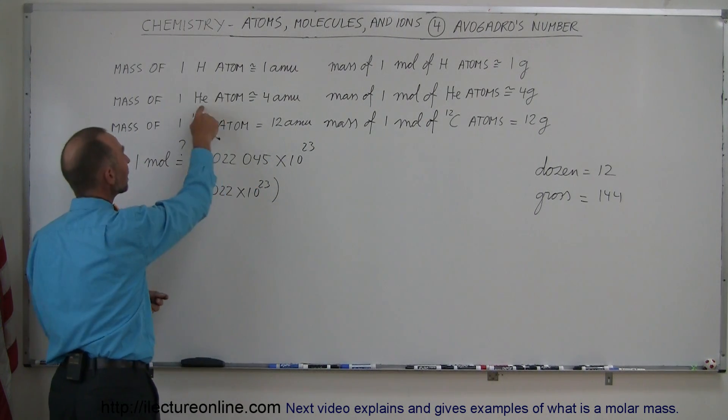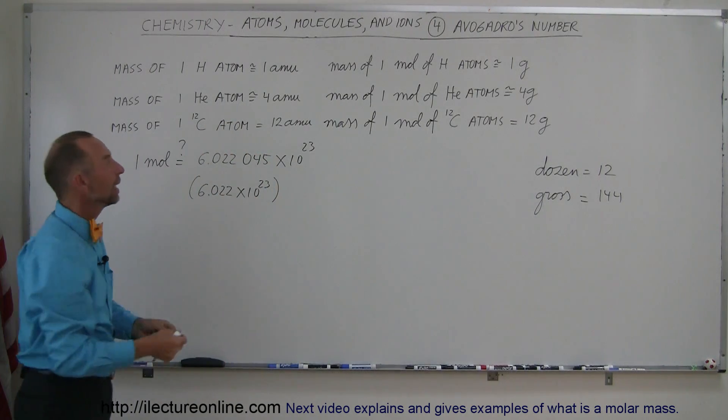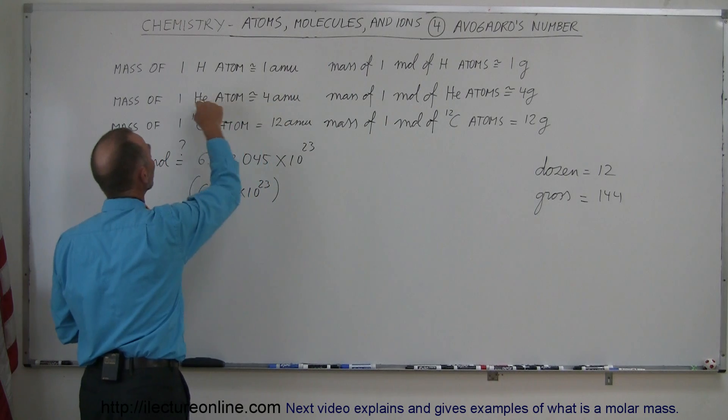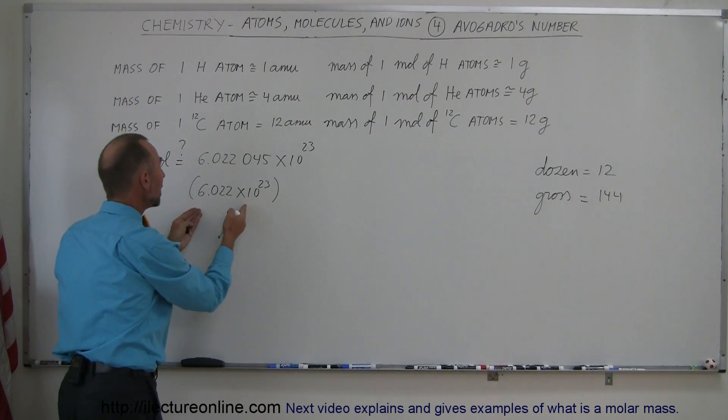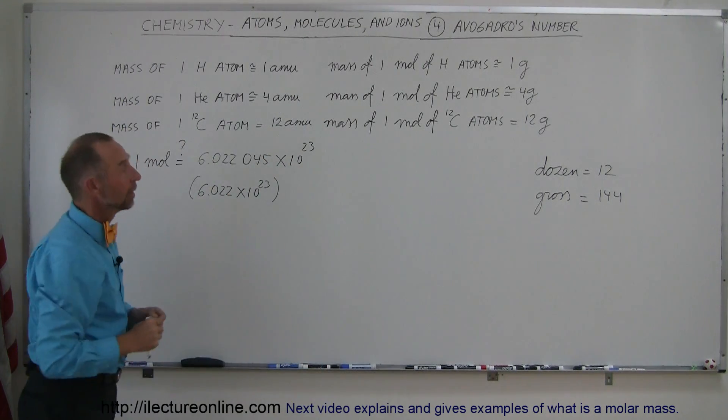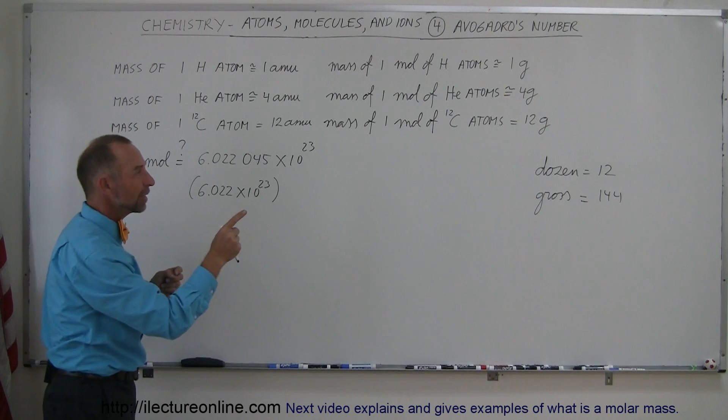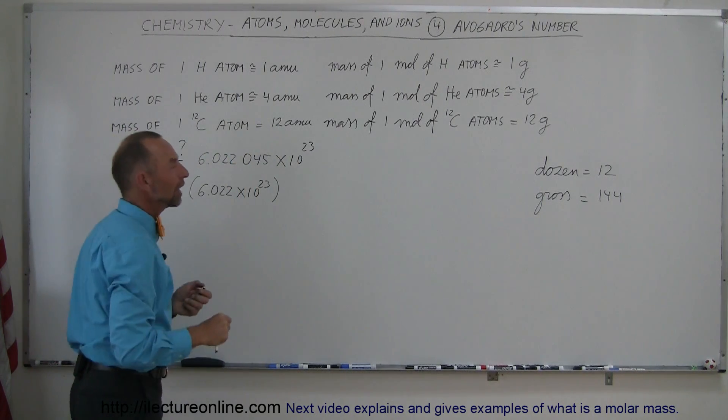If you had this many helium atoms, the mass would be four grams, which would be the same numerically as the number of AMUs for a single helium atom. And if you have this many carbon-12 atoms, you would have a mass of 12 grams of carbon atoms, numerically the same number as the number of AMUs a single carbon atom would have.